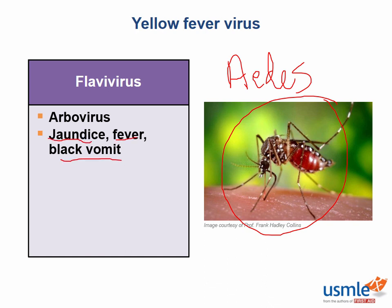Why do you think the patients get jaundice? Well, the virus preferentially infects hepatocytes, leading to inflammation of the liver and subsequent buildup of bilirubin in the bloodstream. The vomit is black because it often can contain digested blood, which is another feature of this yellow fever disease.